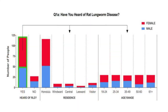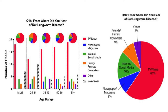To answer my initial hypothesis that a large majority of people do not know about this disease, I first asked whether they had heard of rat lungworm disease. A majority — 82% of the 150 people — said they had heard of it, which is a good thing. What's interesting is that a majority of those people got their information from TV or news, followed by the internet and social media. This gives us a better idea of where to focus our efforts in informing people about this disease.